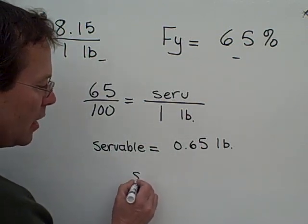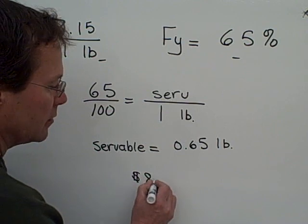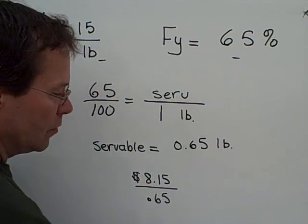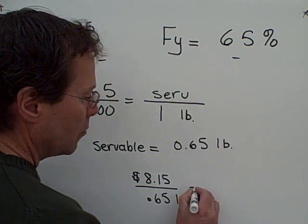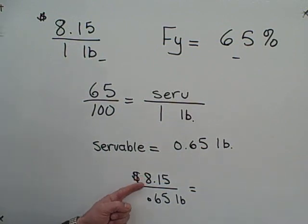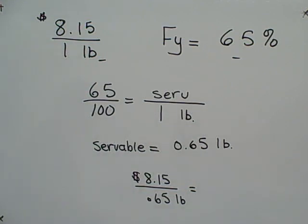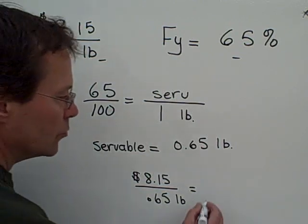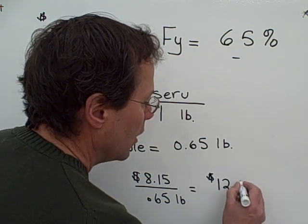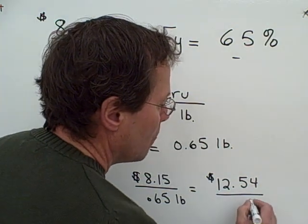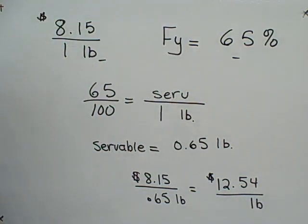So in actual fact, we're paying $8.15 for 0.65 pounds of servable product. And if we work that out in a cost per pound, we have to divide the $8.15 by the 0.65, and that comes to $12.54 per pound of servable.